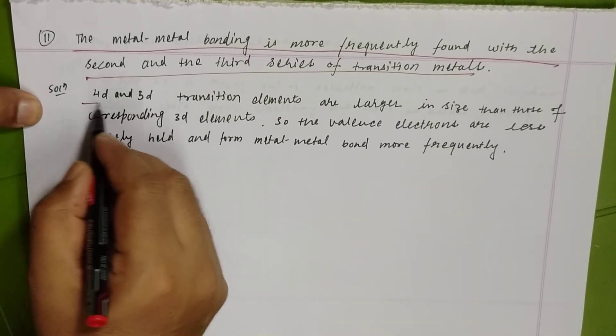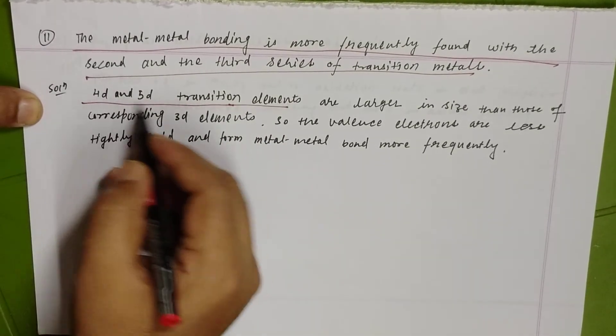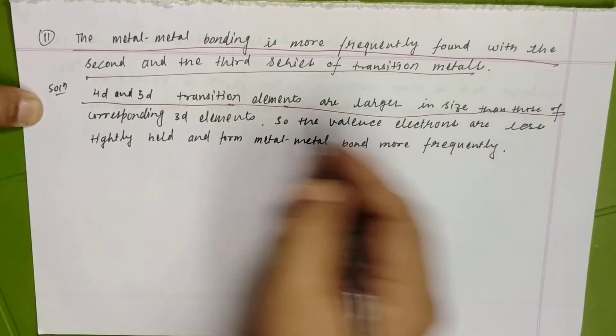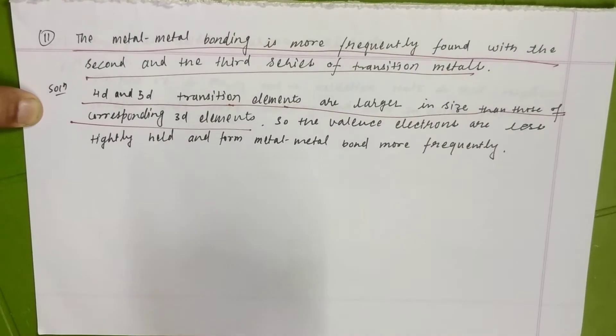You see the answer: 4D and 5D transition series, that is the second and third transition series. These elements are longer in size than those of the corresponding 3D series.